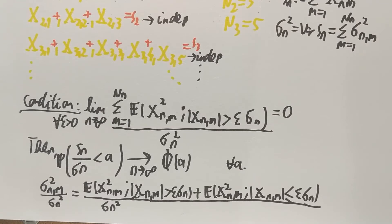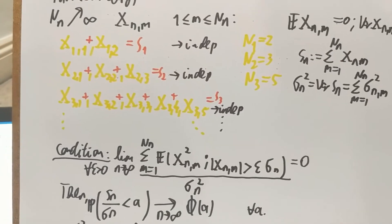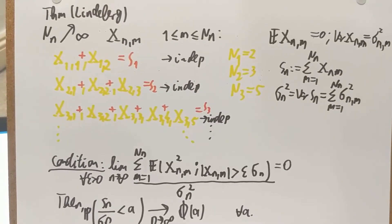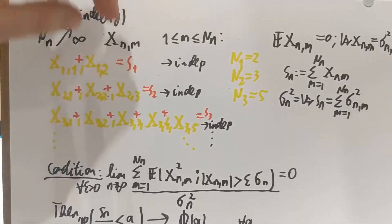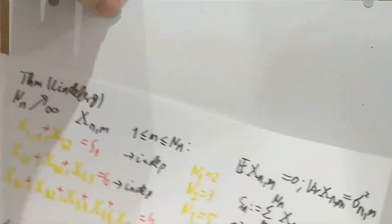I want to show you an example of the Lindeberg CLT. First I mention a non-example — the coupon collector problem. For those who know it: the waiting times of new coupons turn out not to satisfy the Lindeberg condition, and in fact there is no central limit theorem for the coupon collector waiting times. Check that if you wish.